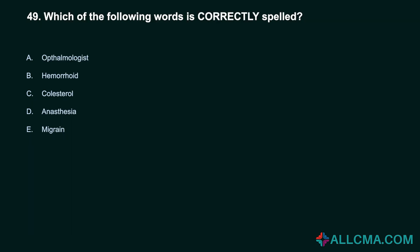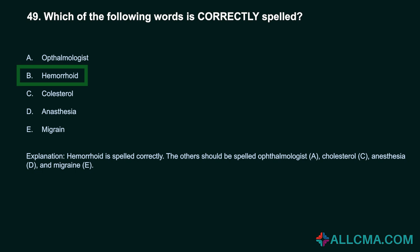Question 49: Which of the following words is correctly spelled? a) ophthalmologist, b) hemorrhoid, c) cholesterol, d) anesthesia, e) migraine. Correct answer: B, hemorrhoid. Hemorrhoid is spelled correctly. The others should be spelled: ophthalmologist, cholesterol, anesthesia, and migraine.